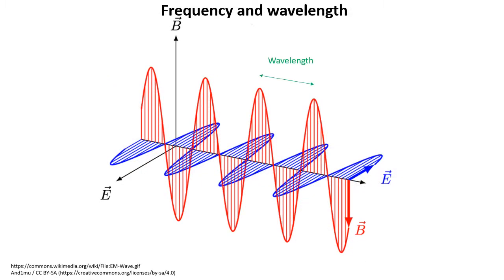The frequency is how often the waves oscillate back and forth, and is measured in Hertz, or cycles per second. The wavelength is the distance between each peak as the waves pass through space. It's equal to the speed of light divided by the frequency.